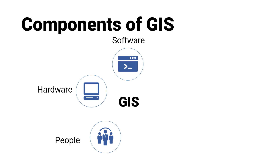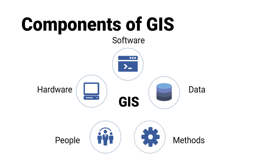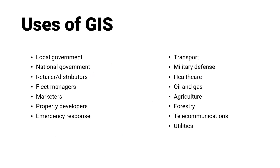Software provides the functions and tools needed to store, analyze, and display geographic information. Perhaps the most important component of a GIS is the data. A GIS can integrate spatial data with other existing data resources, often stored in a corporate DBMS. A successful GIS operates according to a well-designed implementation plan and business rules, which are the models and operating practices unique to each organization.